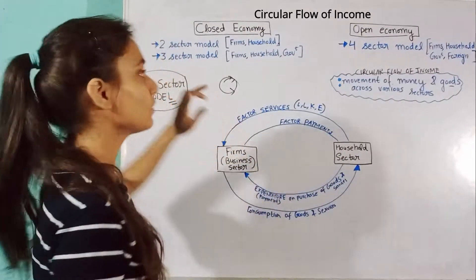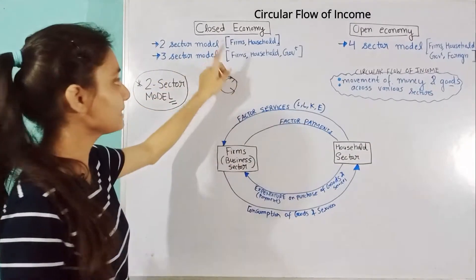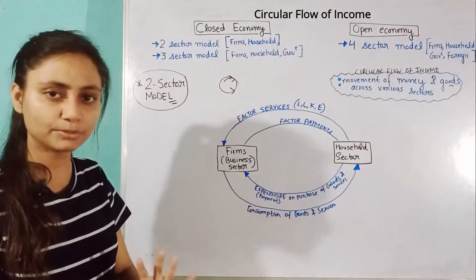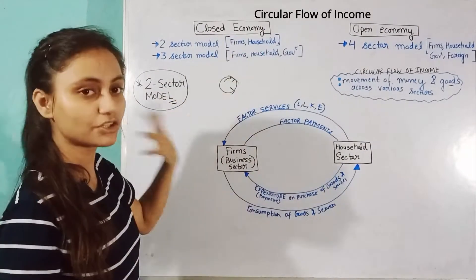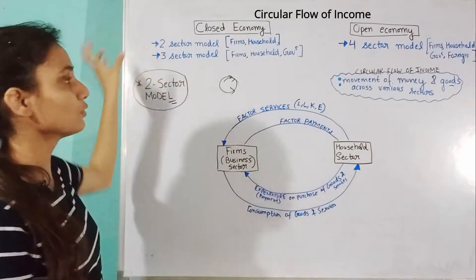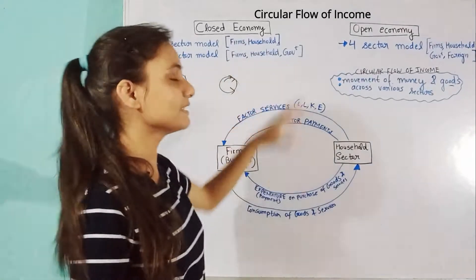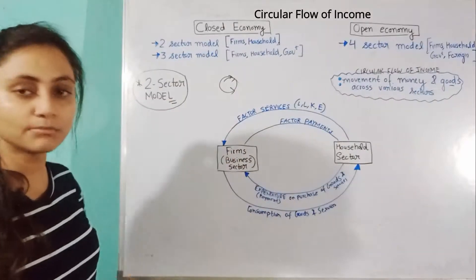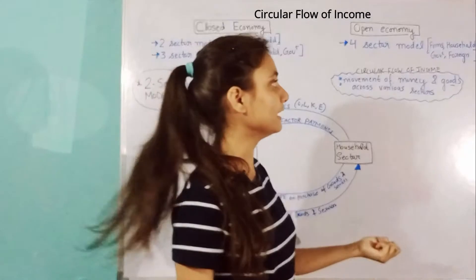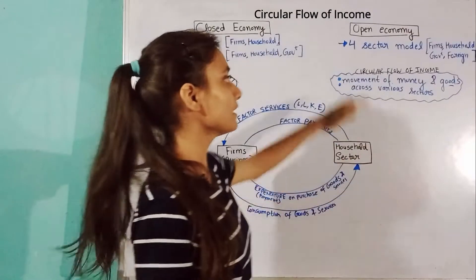When we consider two sectors — producers and households — we call it a two-sector model. When we consider firms, households, and government together, we call it a three-sector model. And when we include the foreign sector as well, we call it a four-sector model.